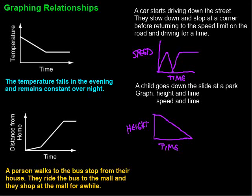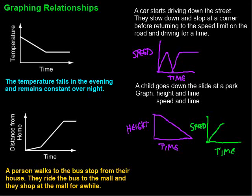Now let's graph speed versus time for the same situation. Time is still on the horizontal axis and speed is on the vertical. At the top of the slide, speed is zero — the child sits down before pushing off. As they go down the slide, speed increases until near the bottom where a little runway slows them down, so they hit a maximum speed and then slow down to a stop.